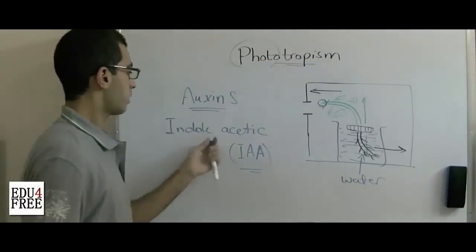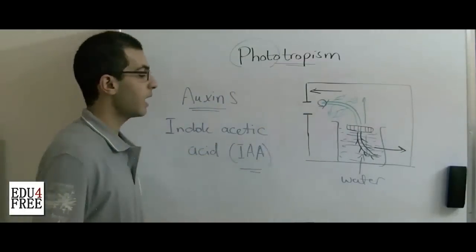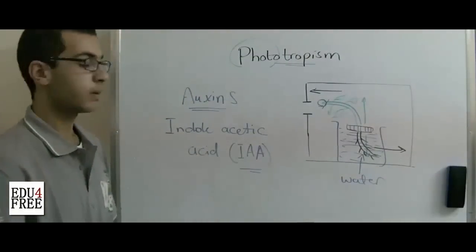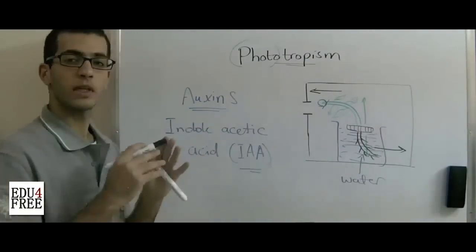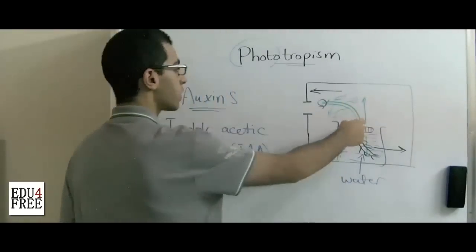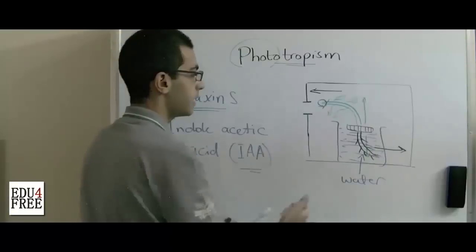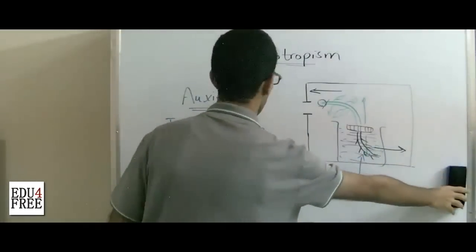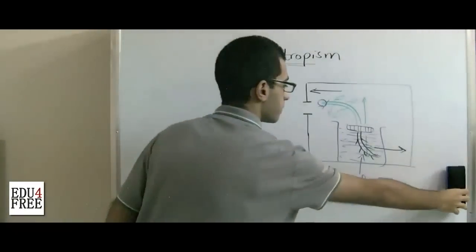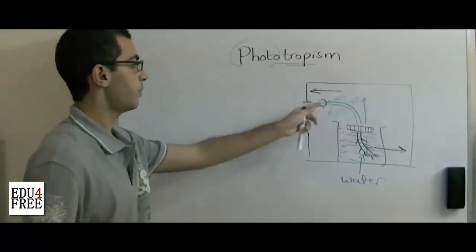This indole acetic acid diffuses from the tip of the plant to the stem, and it's the same way in the roots, and they lead to the curvature. So now we know the reason of curvature. But why exactly does the stem make a curve towards the direction of light and it's vice versa in the roots? So now we know the source of auxins is the tip of the stem.